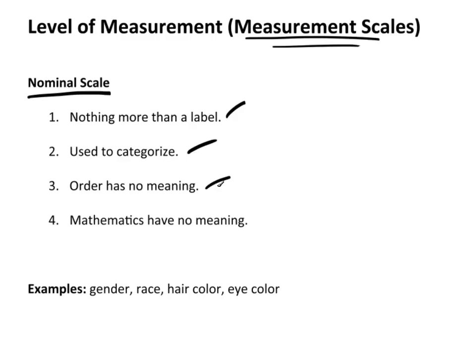Order has no meaning. So if I'm using category one, two, three, four, there is no natural order to it. As an example, very commonly, if we're looking at males and females, if we're going to numerically code it, the most common is a one is a male and a zero is a female. Now there is no order to this.